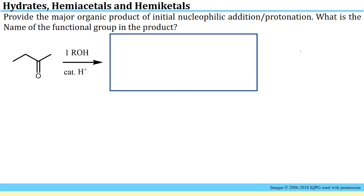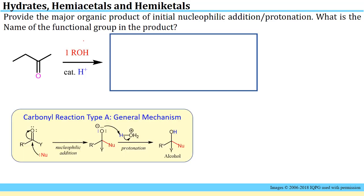We're going to do the same problem, but this time we have one equivalent of an alcohol, ROH, as the starting material. We'll start by identifying the nucleophile. In this case, it's going to be this alcohol, and we'll keep in mind the general carbonyl type A reaction mechanism.